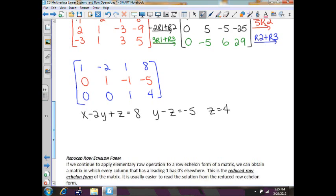So because z is equal to 4, y minus 4 is equal to negative 5, which means y will be negative 1. Since y is negative 1, z is 4. x minus 2 times negative 1 plus 4 equals 8. x plus 2 plus 4 equals 8, which means x will equal 2. So that means your answer will be negative 2, negative 1, 4.